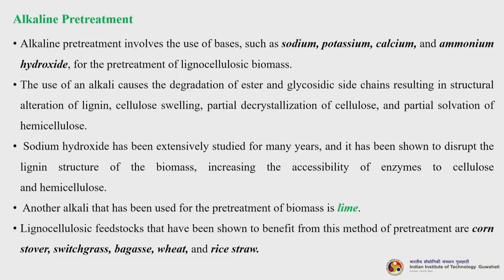The next one is alkaline pretreatment. Alkaline pretreatment involves the use of bases such as sodium, potassium, calcium and ammonium hydroxide for pretreatment of lignocellulose biomass. The use of an alkali causes degradation of ester and glycosidic side chains, resulting in structural alteration of lignin, cellulose swelling, partial decrystallization of cellulose and partial solvation of hemicellulose. Sodium hydroxide has been used extensively to disrupt the lignin structure, increasing the accessibility of enzymes to cellulose and hemicellulose. Lime has also been used. Feedstocks benefiting from this method include cornstover, switchgrass, bagasse, wheat and rice straw.